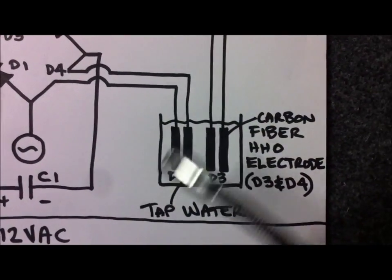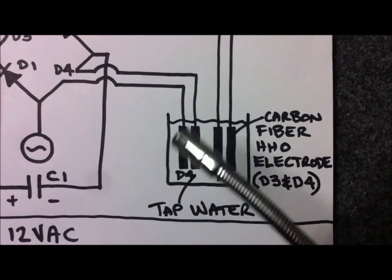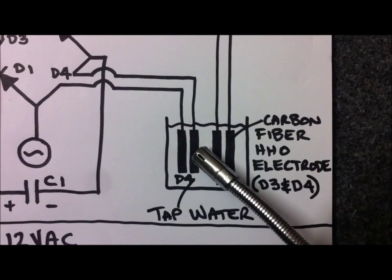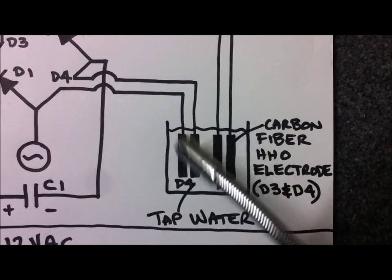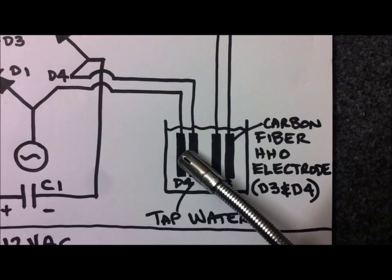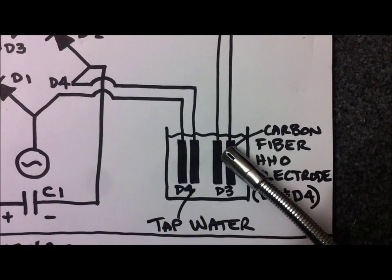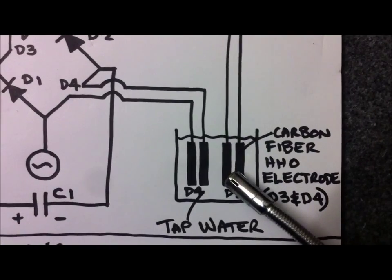So they're both going out to the same container, sharing the same cell. One set of plates is producing HHO on one rectified pulse of the DC. The other one is producing HHO on the opposite polarity pulse.